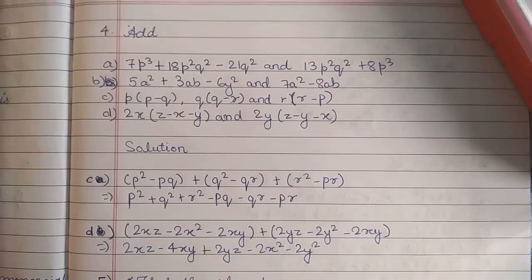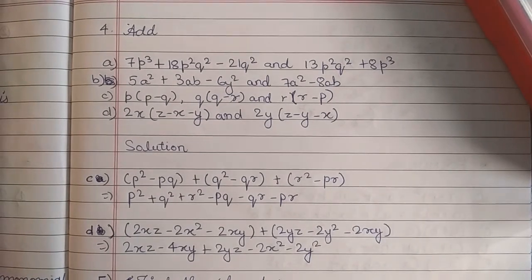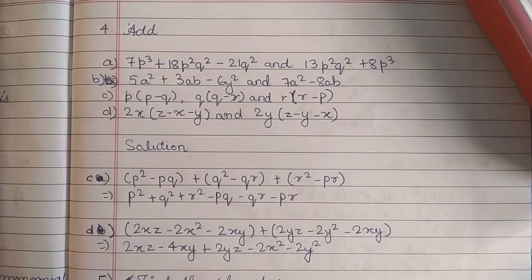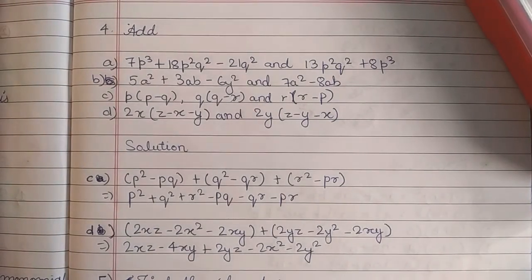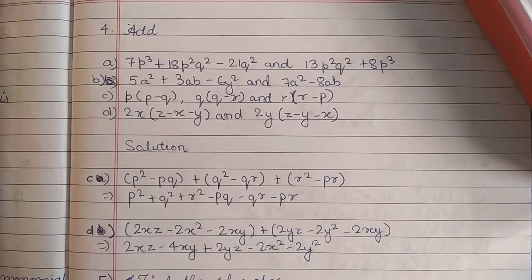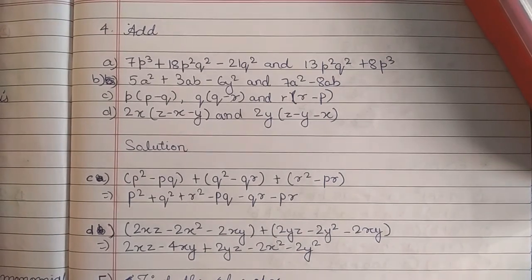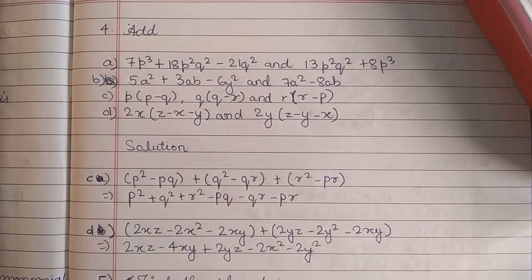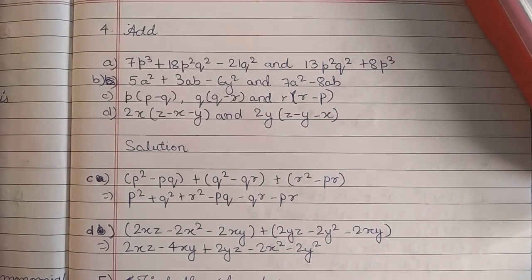Now coming to d. 2x(z - x - y) + 2y(z - y - x). So here you can see the solution. 2xz - 2x² - 2xy + 2yz - 2y² - 2xy. So the answer is 2xz - 4xy + 2yz - 2x² - 2y².